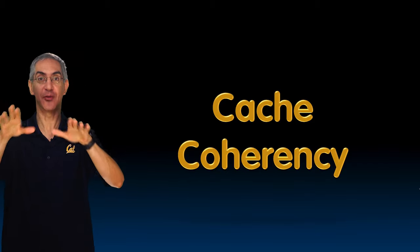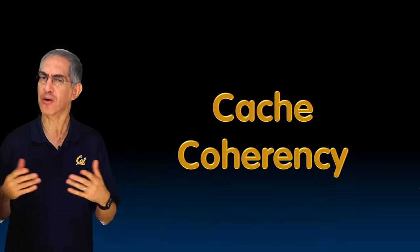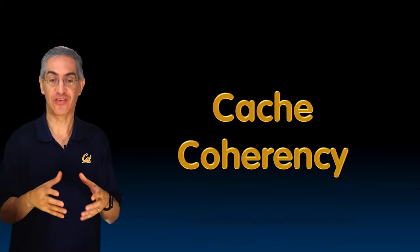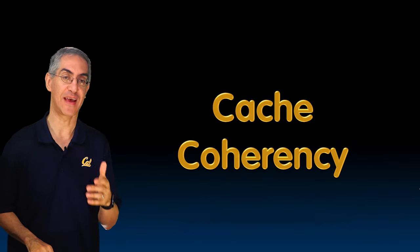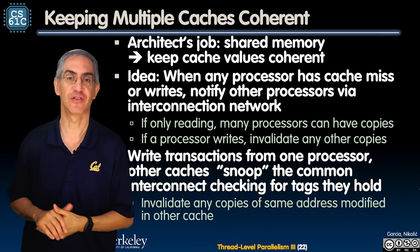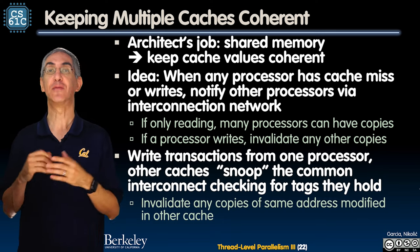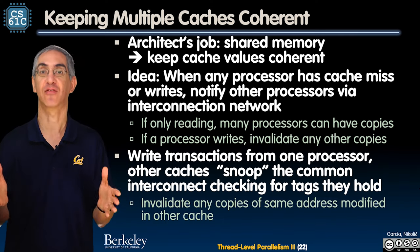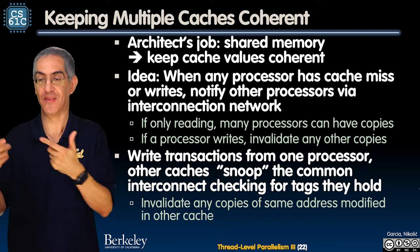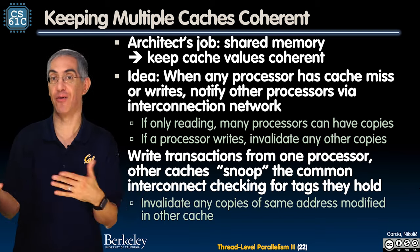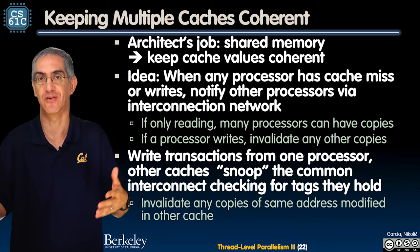Let's explore cache coherency, one of the hardest parts of putting together a system that has multi-core, where each core has some number of caches, and the caches are either shared or not shared. From the point of view of an architect, we need to think about how to keep the cache values coherent. The problem: when one cache has 20 and I want to write 40, the wrong value happens. Caches should only make things faster — they should never change the value.